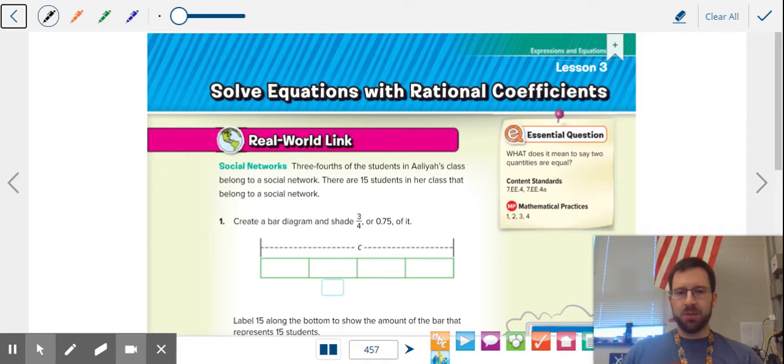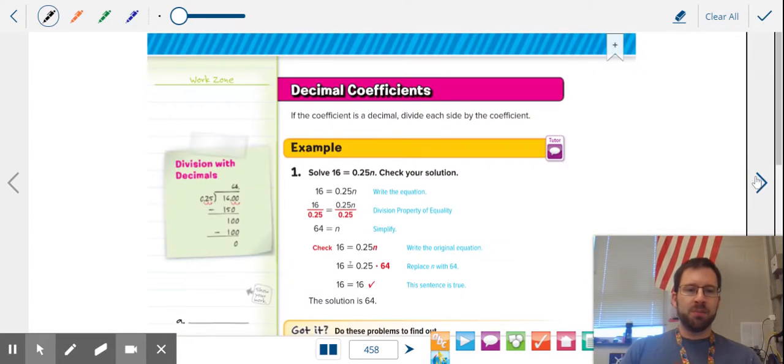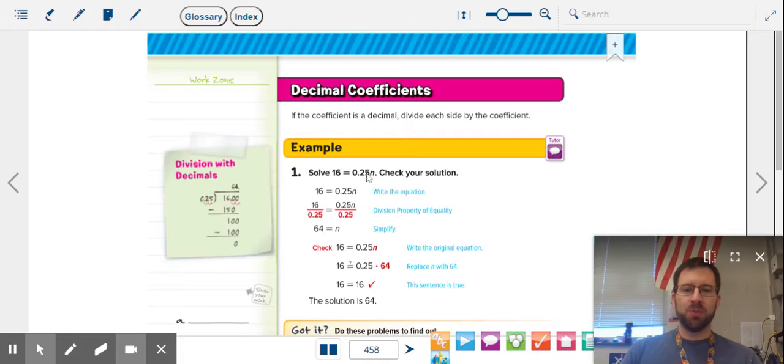We're going to put all those together and we're going to talk about rational equations. So these are equations that have decimal and fraction coefficients. Remember the term coefficient means the number that is attached to a variable. So we're going to be looking at equations that have variables with numbers that are fractions and decimals.